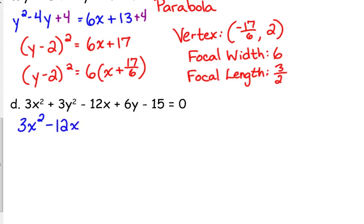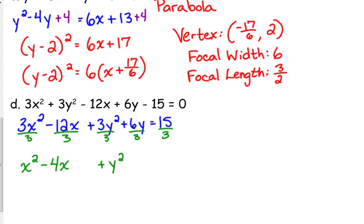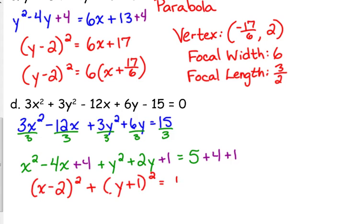3x squared minus 12x plus 3y squared plus 6y is equal to 15. Take out the GCF of, or you know what, actually let's divide the entire equation by 3. Because every single one of those are divisible by 3. That way we don't have to deal with the GCF thing. x squared minus 4x plus y squared plus 2y is equal to 5. And I'm leaving my spaces so that I can complete the square. 4 divided by 2 is 2, squared is 4, add it to both sides. 2 divided by 2 is 1, squared is 1, add that to both sides.